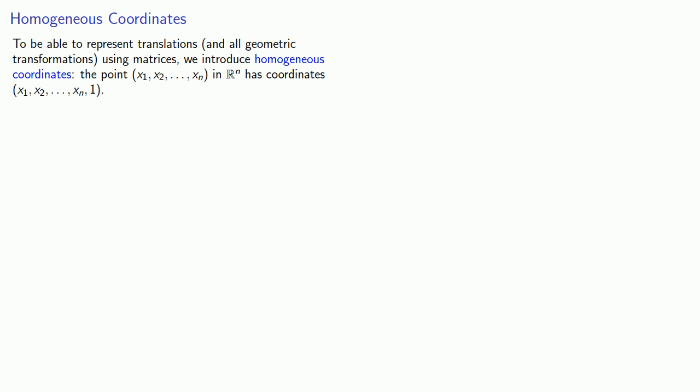To be able to represent translations and all geometric transformations using matrices, we introduce homogeneous coordinates. The point (x1, x2, ..., xn) in Rn has coordinates (x1, x2, ..., xn, 1).